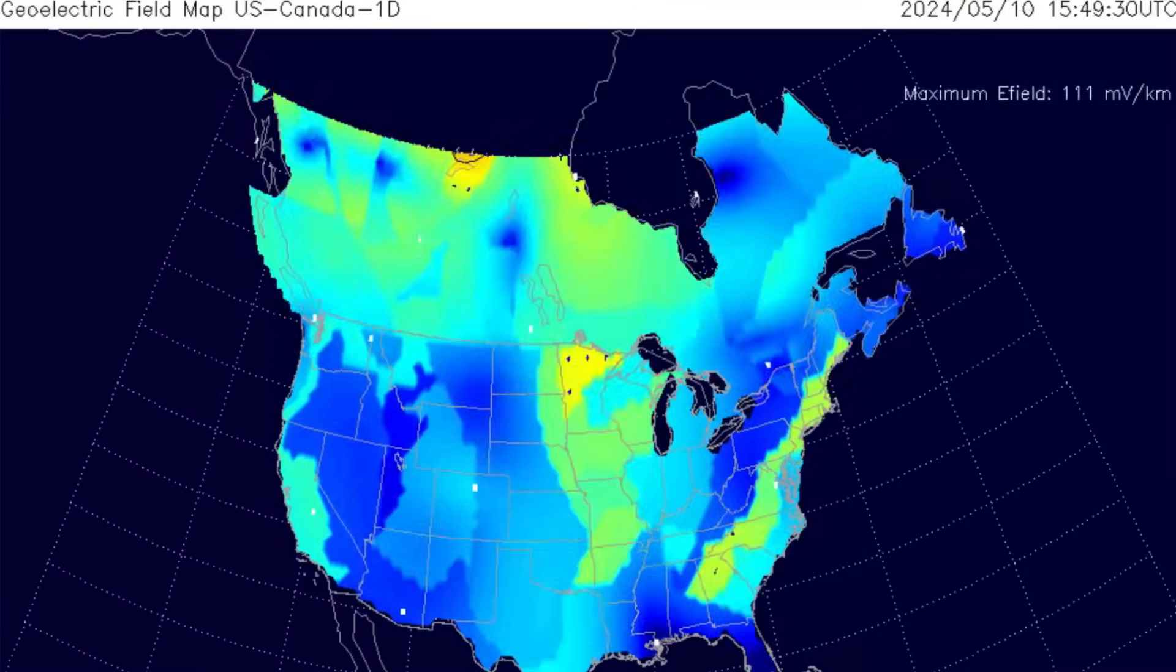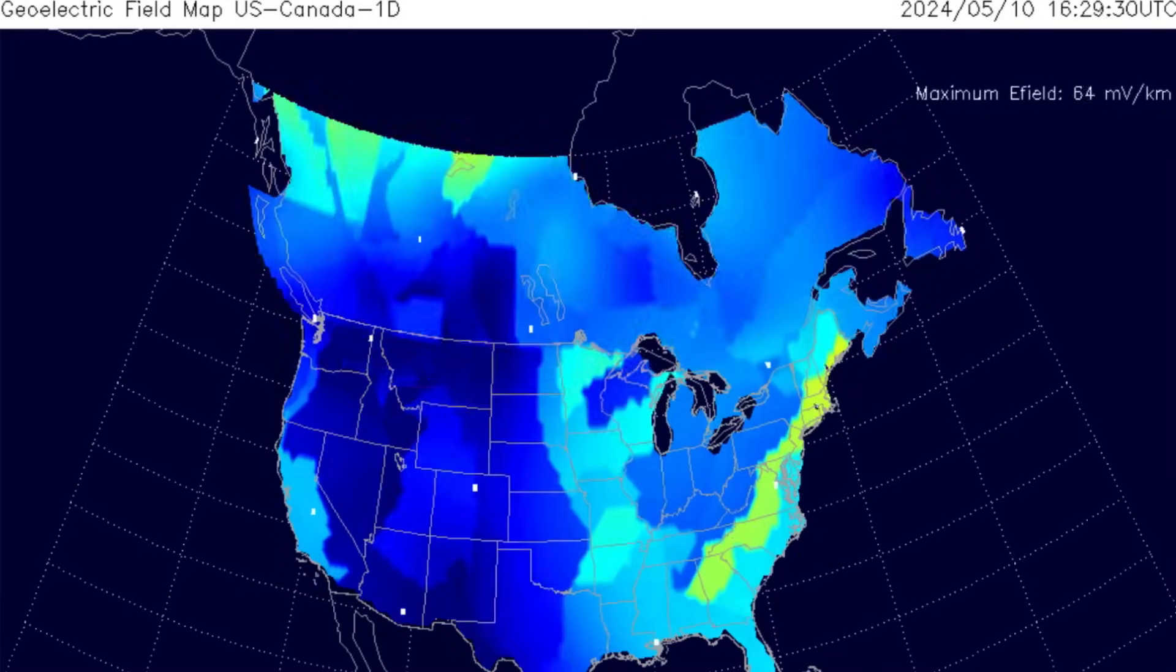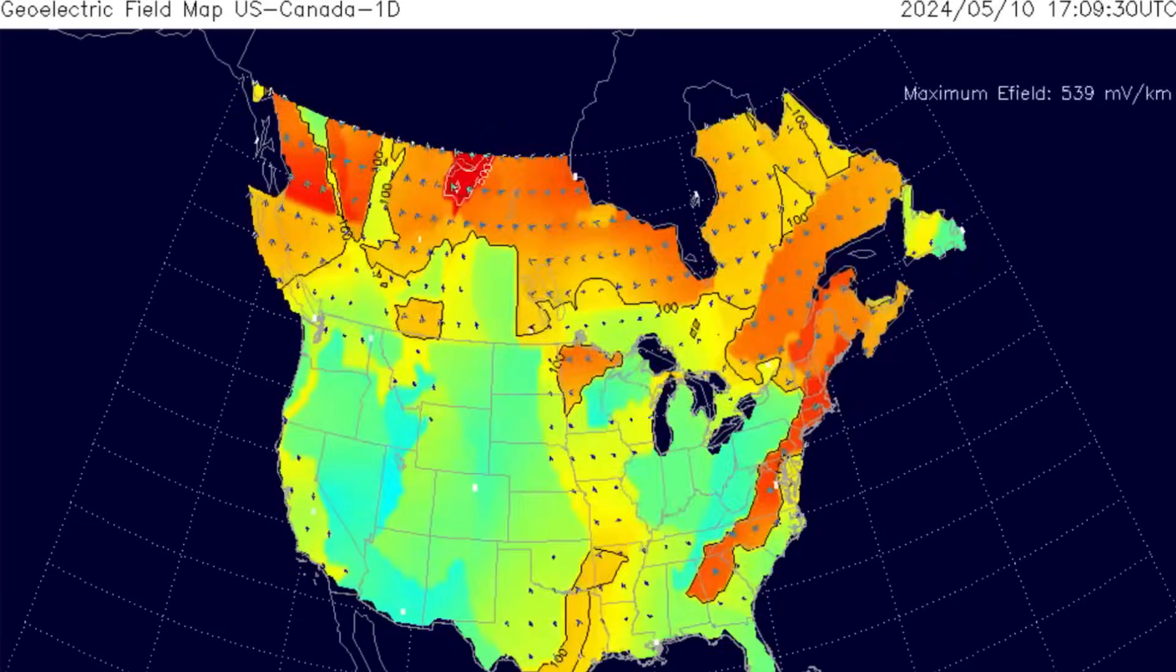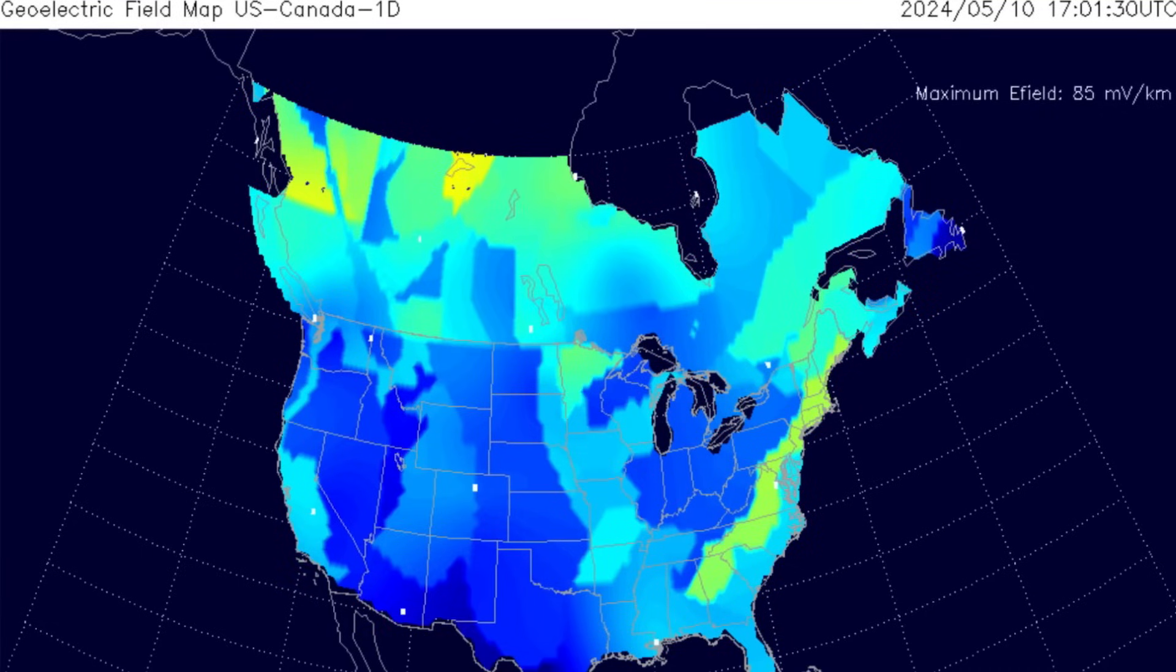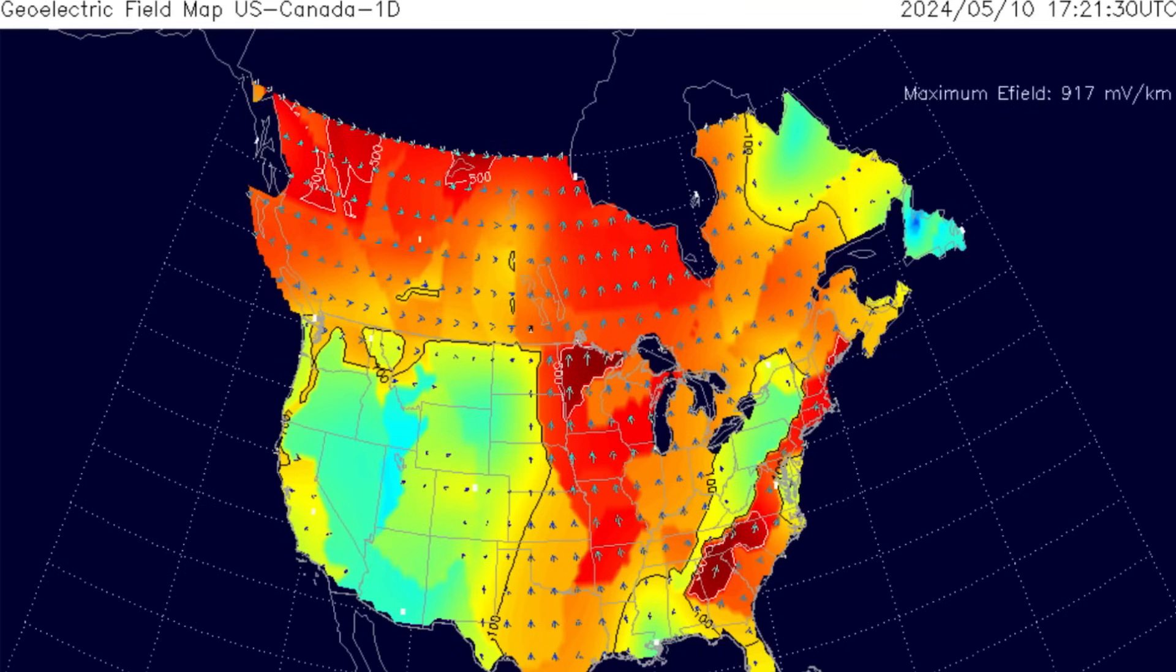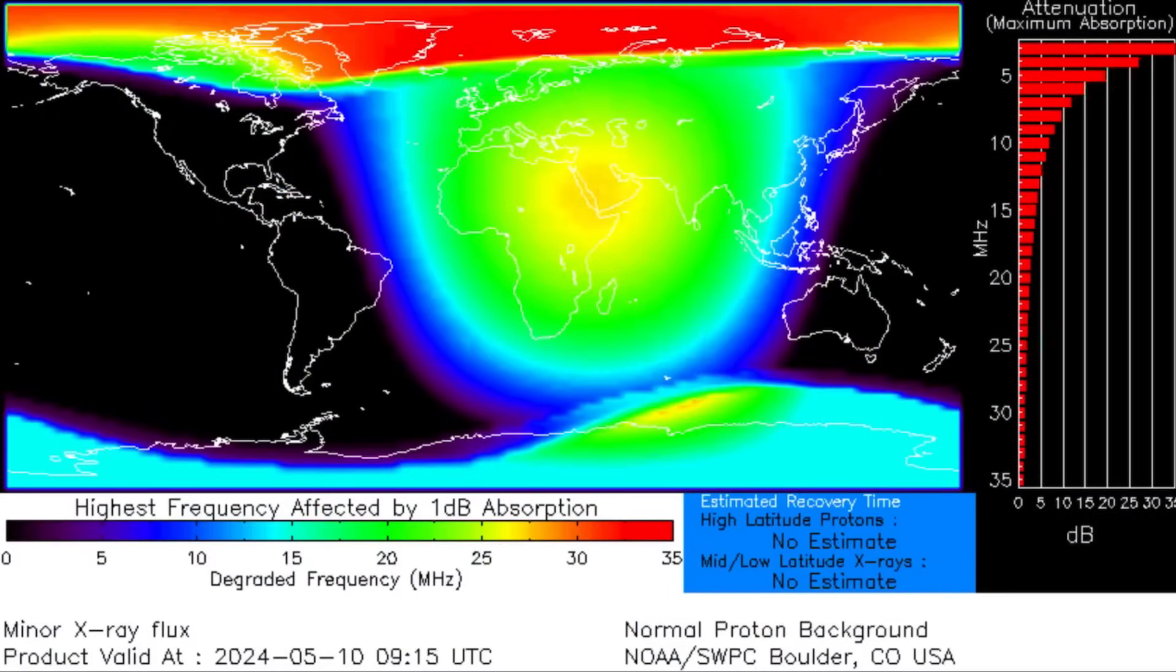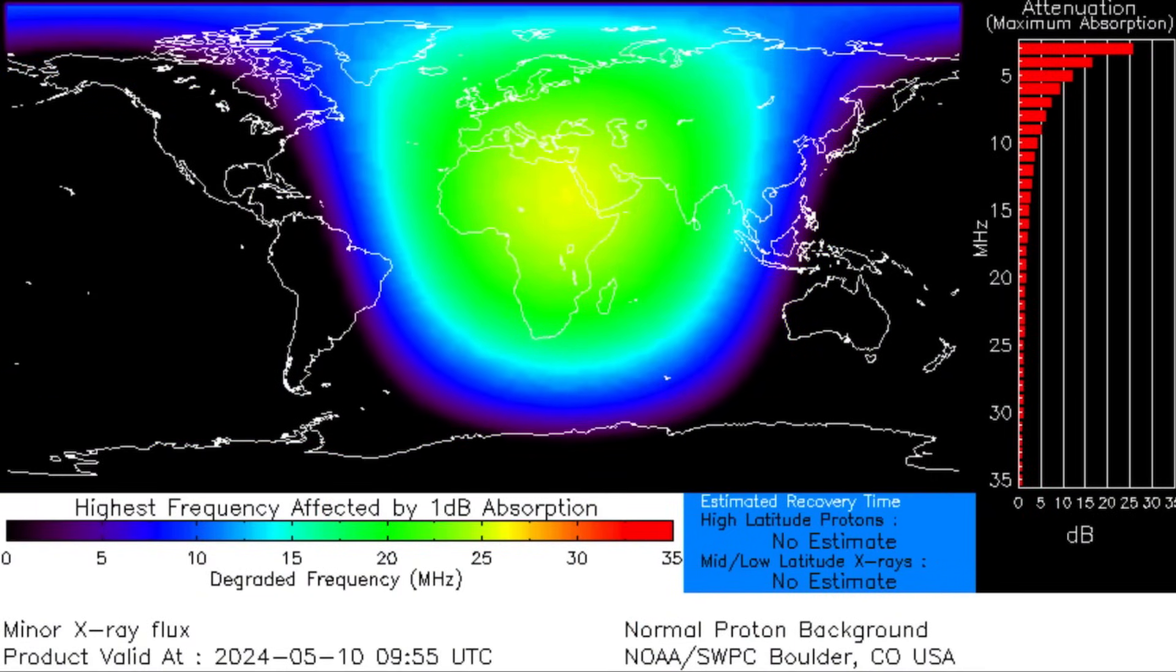Across North America, this is showing the geoelectric field map as the solar storm made impact today. So, it was electrifying across North America as this event made impact. So, across the skies through Canada, Yukon, and as well, as far south as possibly California, Alabama, you will see Aurora Borealis, northern lights.